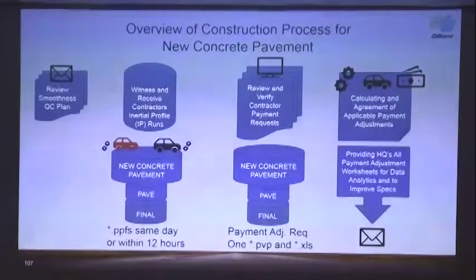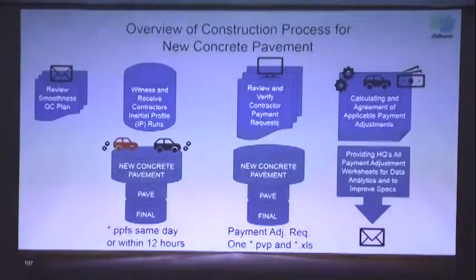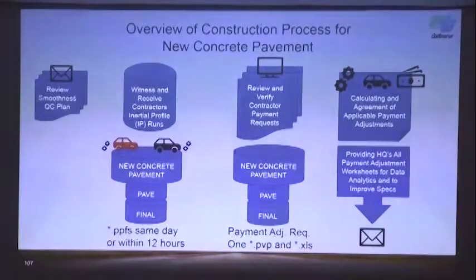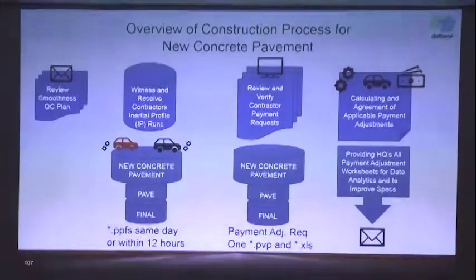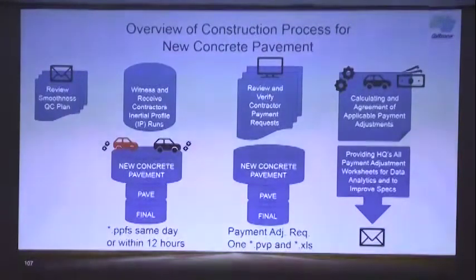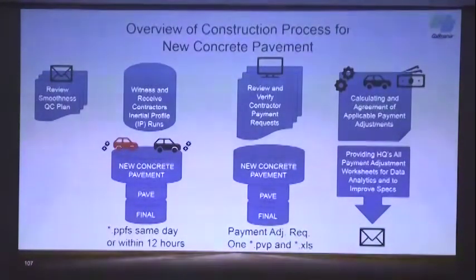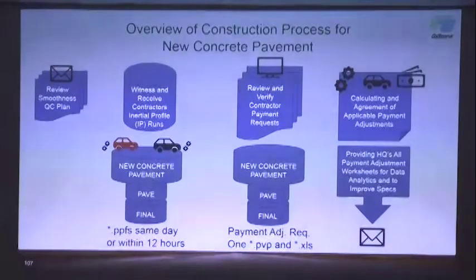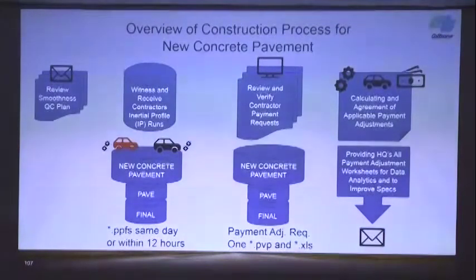This is the overview of the construction process for new concrete pavement. We start with the QC plan. For new concrete pavement, you have the pave profile and also the final profile, and those will be used for payment. Caltrans will witness and receive those inertial profiler runs, verify them, calculate and agree on payments, and then worksheets will be provided to Caltrans for further improvement.